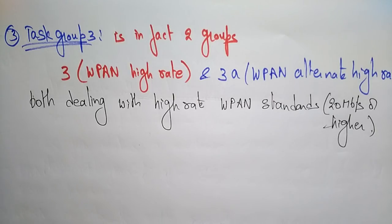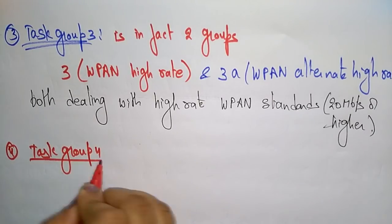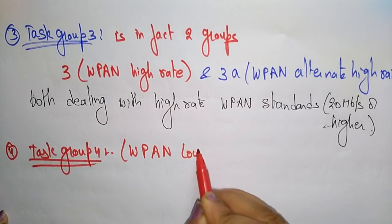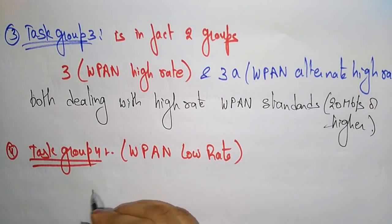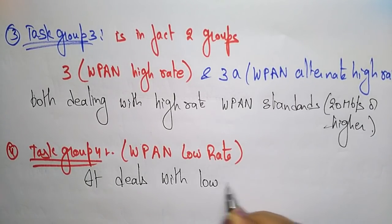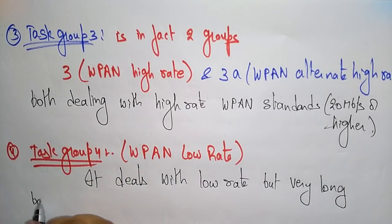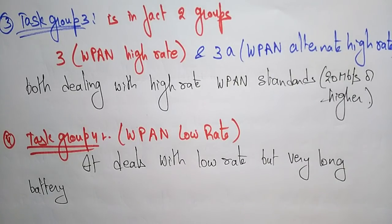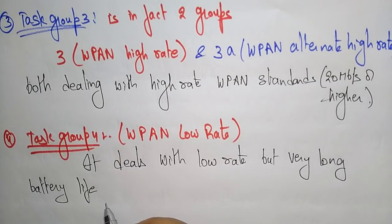The last group is Task Group 4, which works on wireless PAN low rate. It deals with low data rates but features a very long battery life — lasting from several months to even a year. These are the four task groups present in the wireless Personal Area Network. Thank you.